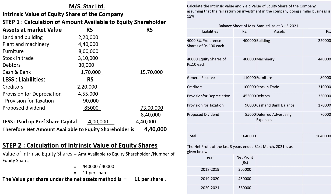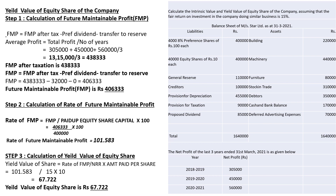Now for yield value of equity share, we use three steps. Step one is calculation of FMP — future maintainable profit. Step two is to calculate the rate of future maintainable profit. Step three is the calculation of yield value of equity share.